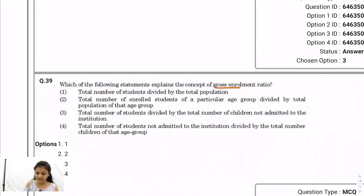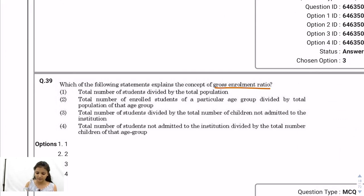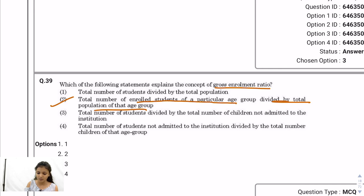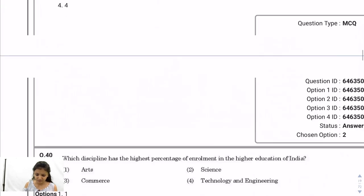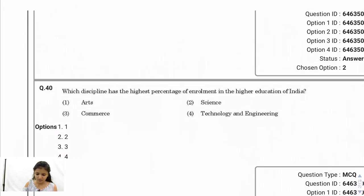Question 39: Gross enrollment ratio is the total number of enrolled students of a particular age group divided by the total population of that age group. The correct option is option 2. Question 40: The discipline with the highest percentage of enrollment in higher education in India is arts — with 98.9 lakh students enrolled. After arts comes science, then commerce. So arts has the highest enrollment percentage.